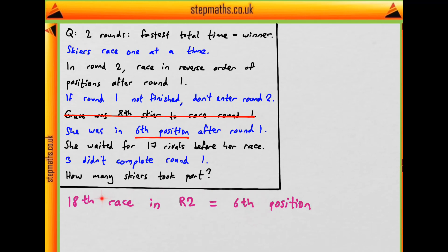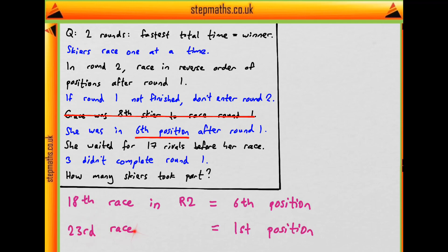If they're going in reverse order of their positions, what number race would be first position? The difference between 6 and 1 is 5, so 18 plus 5 means the 23rd race in round two corresponded to the person in first position after round one.